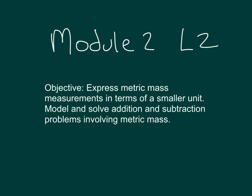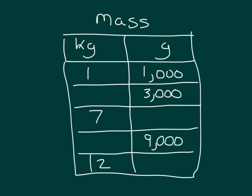The objective is to express metric mass measurements in terms of a smaller unit. We'll also be modeling and solving addition and subtraction problems involving metric mass. Here we're talking about mass of an object. With the metric system, we could be measuring within kilograms or grams, where one kilogram equals 1,000 grams.